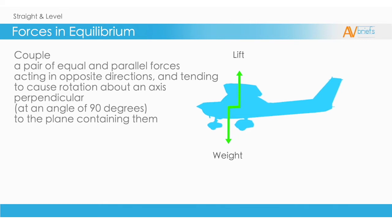This is at 90 degrees to the plane containing them, which is the normal axis. You can see from the diagram that lift and weight are joined, and when either are increased or decreased in strength, it will have a direct effect on the other.